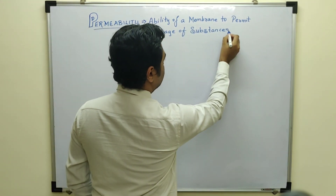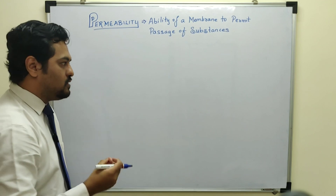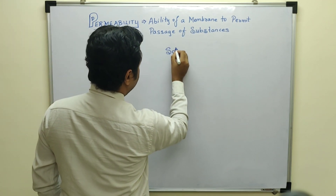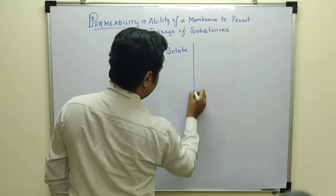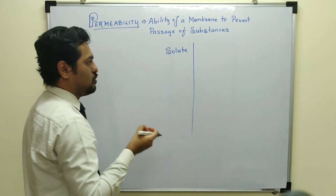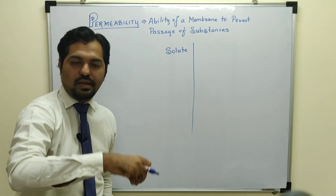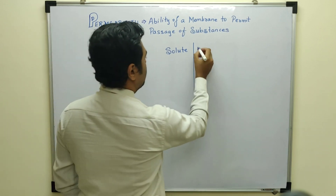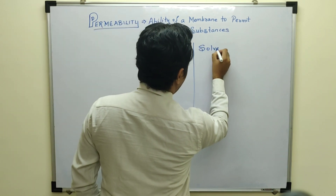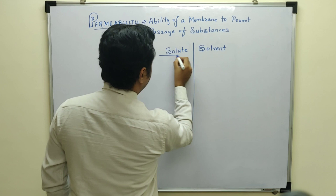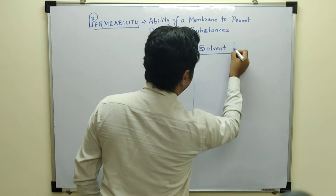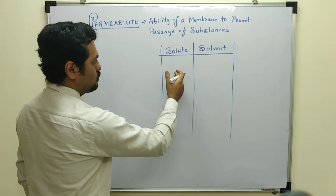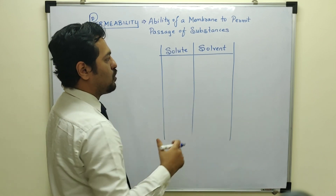These substances are mainly those found in a solution. So what do we find in a solution? First, there are solutes — substances that dissolve in a medium. The medium in which the solute dissolves is called the solvent. Solute and solvent together form the solution. So, which type of membrane allows which type of solute or solvent?